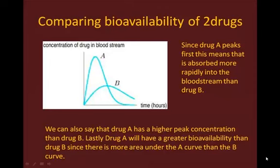Next, we can also say that drug A has a higher peak concentration than drug B. That just means that its peak is higher than drug B, so the concentration is higher when it peaks. Lastly, drug A will have a greater bioavailability than drug B, since there's more area under the A curve than under the B curve.